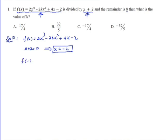F of negative 2 equals the remainder, which is 8. So F of minus 2 equals 8.